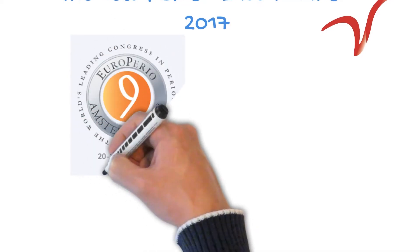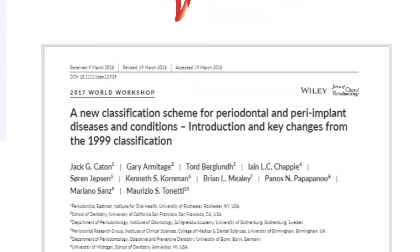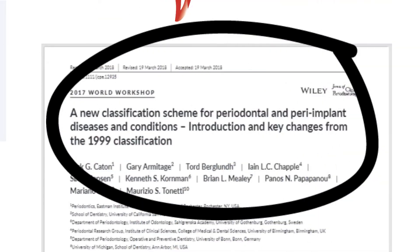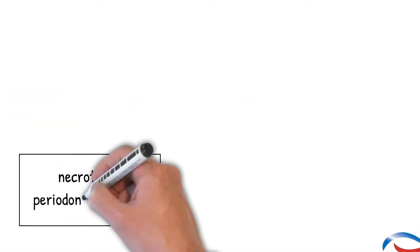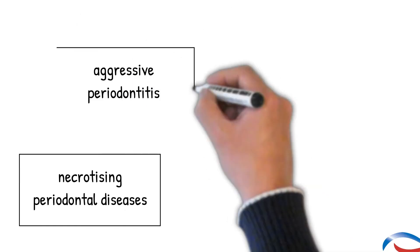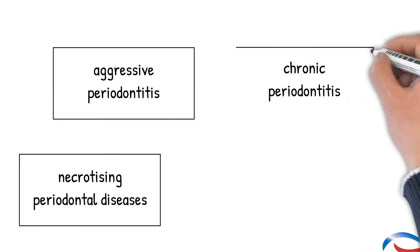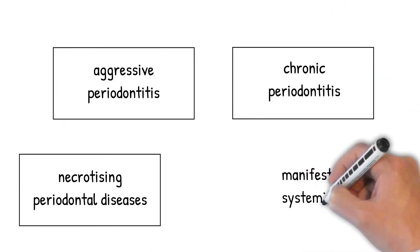Hi, today we're going to explain the new periodontal classification system which was released last year following the World Workshop in Periodontology in 2017. Previously, there were four main categories of periodontal disease according to the old 1999 classification system.